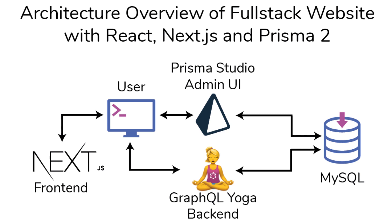On the front end, we'll be using Next.js so that you can get all this server-side rendered goodness. The back end will be an Express server made with GraphQL Yoga, and it will hook into the Prisma 2 runtime engine, which will query a MySQL database. We'll also use Prisma Studio as an admin portal where we can see at a glance all of the different tables and records in our application.